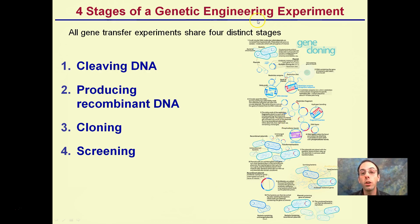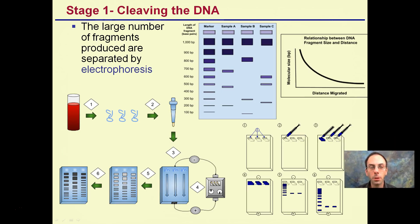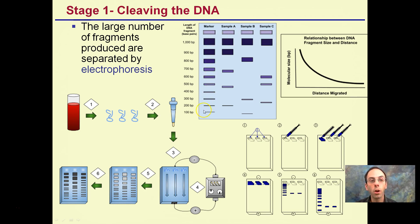There are four stages to the genetic engineering experiment. This large view shows generally all the steps just covered in more detail. Stage one involves cleaving DNA — a large number of fragments are produced and separated by electrophoresis. In a quick summary, we take our long DNA, put it into wells, chop it into different sections, and separate them based on size. Larger fragments stay closer to the origin; smaller fragments travel further because they're pulled by electrical current — that's where the term 'electro' comes in.